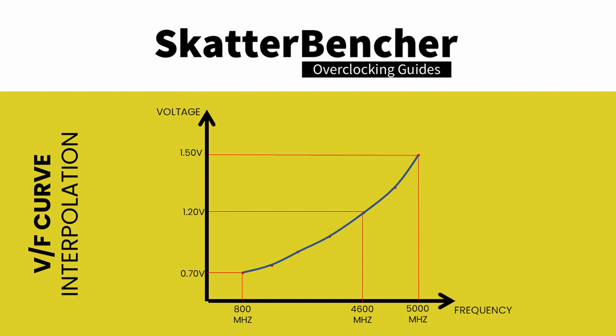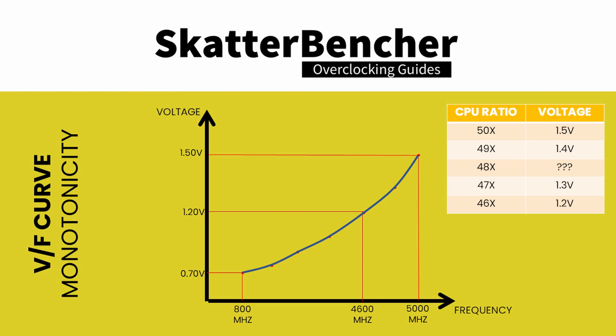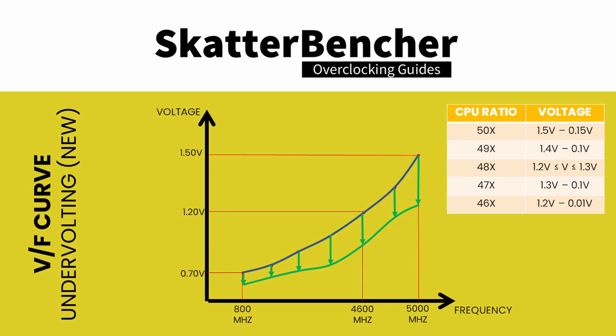The amount of VF points is not architectural and can change between SKUs. In other words, specific SKUs can have more or less predefined VF points. Also, the interpolation method is not architectural and can change at any time. The only requirement for the VF curve is monotonicity. Following a monotonic function, as a rule, the voltage for a given CPU ratio must be equal to or higher than the next lower ratio. So the voltage for 48X must be equal to or higher than 47X. The main purpose of Advanced Voltage Offset is to provide end users with a way to undervolt their CPUs at specific points on that VF curve.